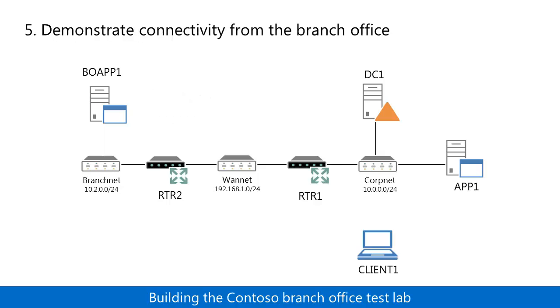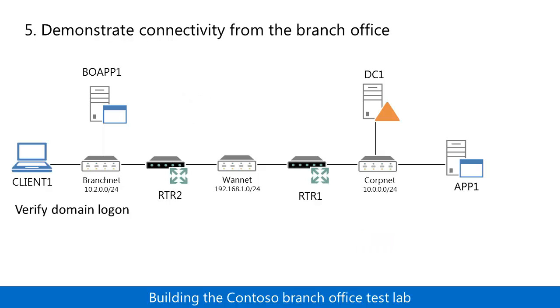In step five, you connect Client1 to the Branchnet subnet, ensure that it logged on to the domain using DC1, and then test access to the web and file share resources on BOApp1.